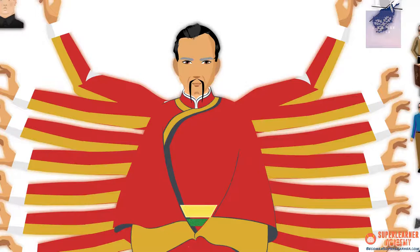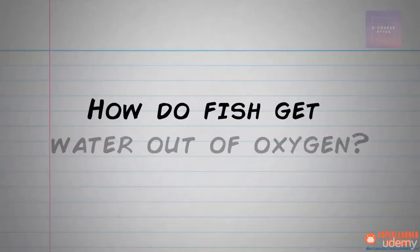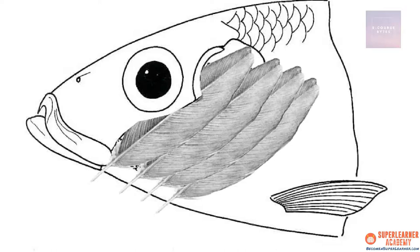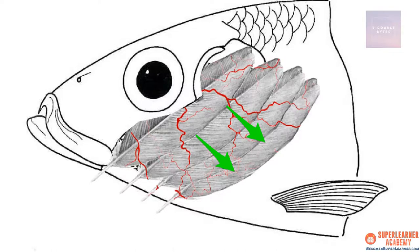Let's try another random piece of information. Here's one I've actually wondered before: how do fish get oxygen out of water? Here's the answer: gills are feathery organs full of blood vessels. A fish breathes by taking water into its mouth and forcing it out through the gill passages. As water passes over the thin walls of the gills, dissolved oxygen makes it into the blood and travels to the fish's cells. By now I know you all pictured a silly looking fish with bird's feathers for gills. Did you also picture a lot of blood vessels weaved into those feathers? Or an arrow or some other kind of logical marker going from the mouth through the gills?